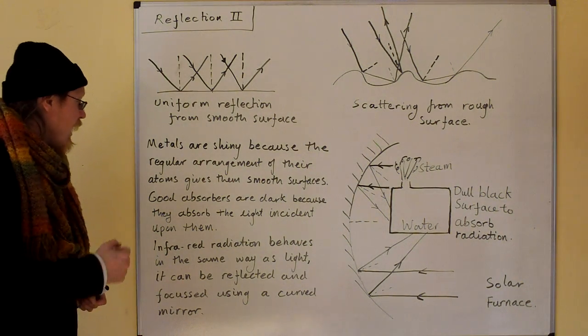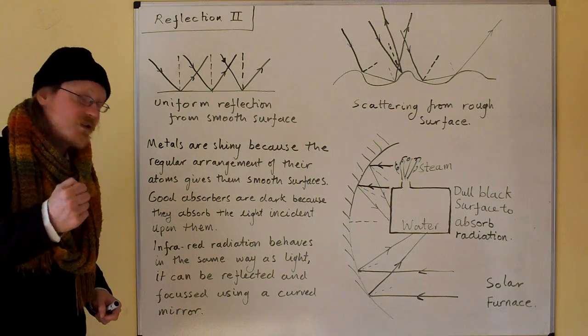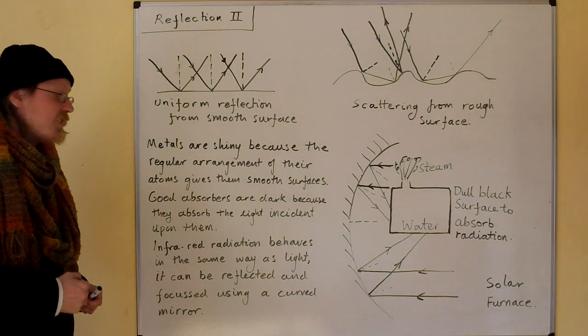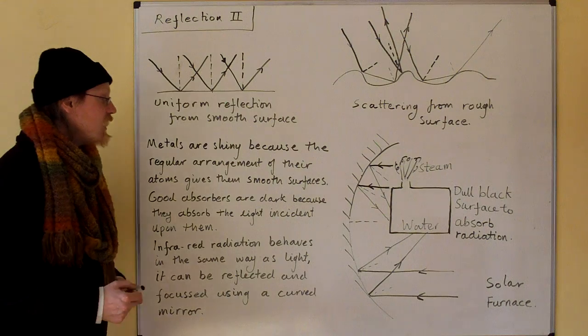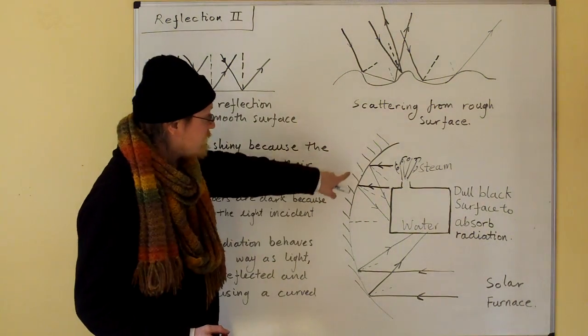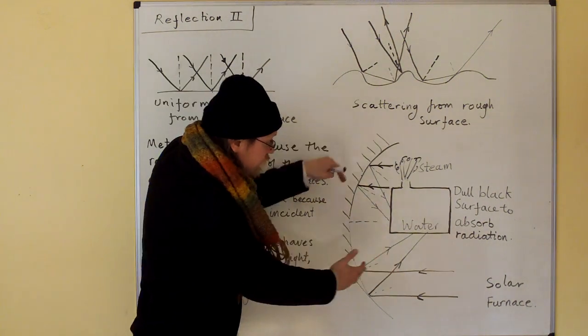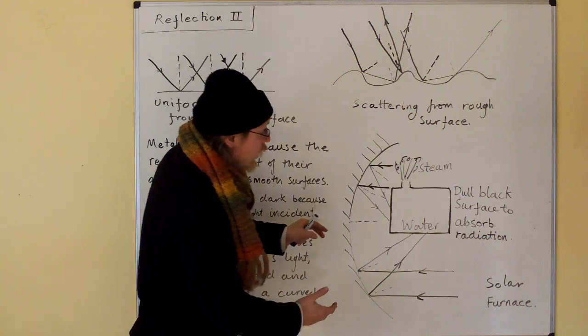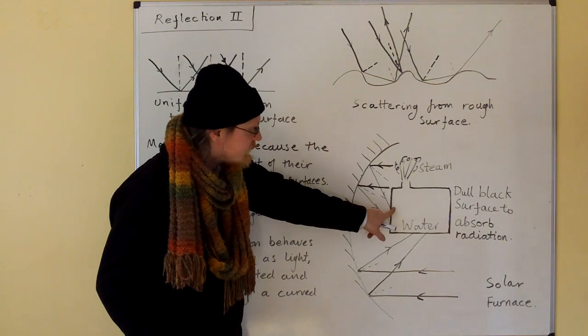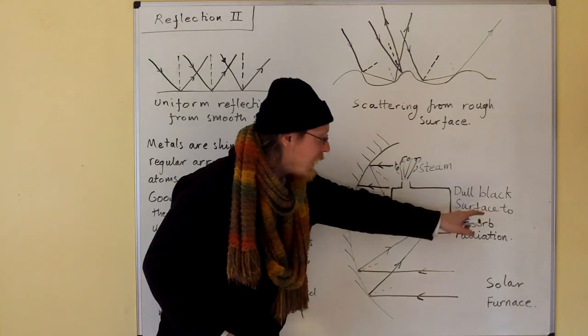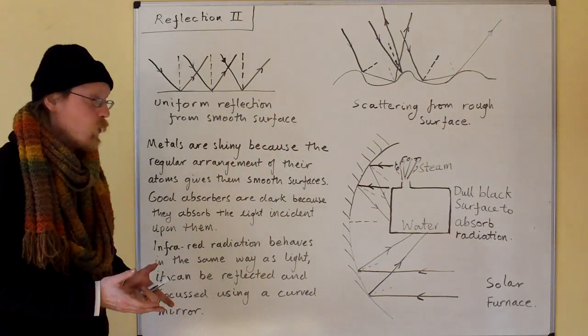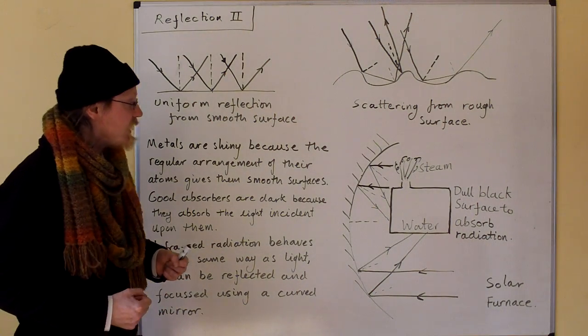Infrared radiation behaves in the same way as light. It can be reflected and focused using a curved mirror. So here we have a curved mirror, and here we are concentrating all the light on this water tank. And it's a dull black surface, the surface of the water tank, to absorb all this infrared radiation.